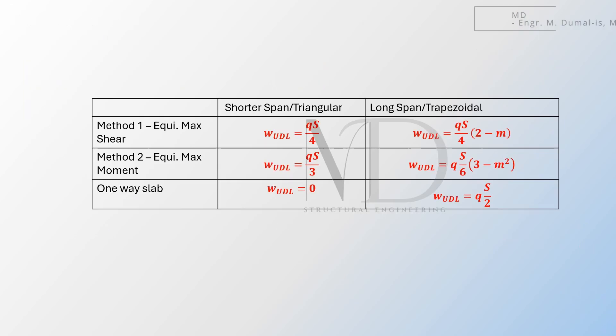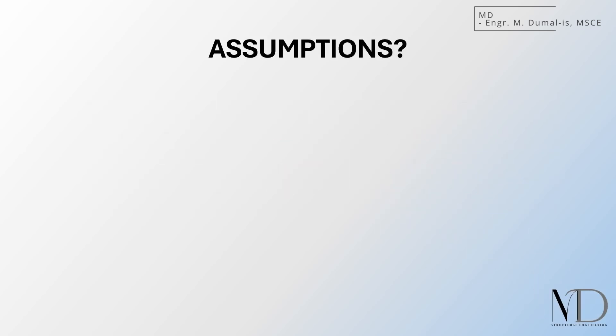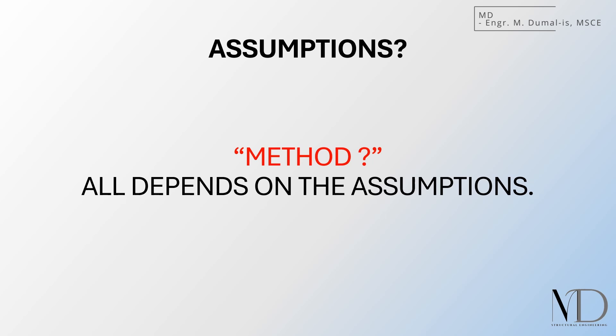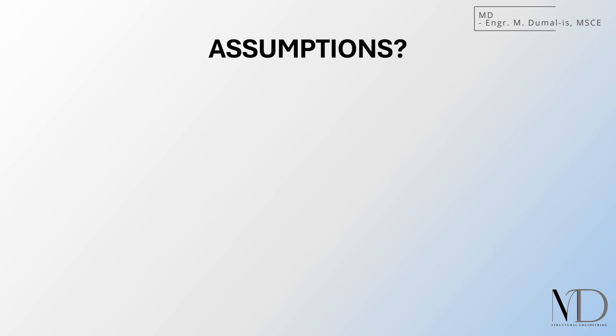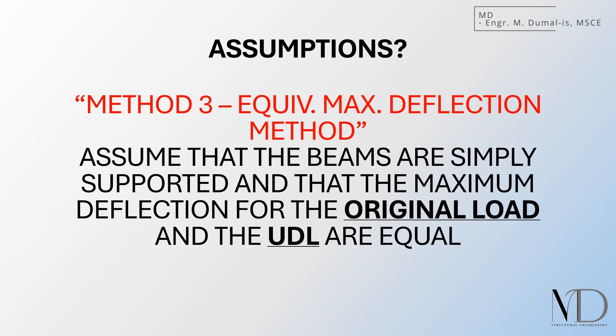The result of the derivation can then be summarized into a tabulation. Notice that in all the methods we used, we only focused on a specific structural response, whether it was shear or moment, and assumed that the result from the original load and the UDL were equal. This means we can actually expand our approach further by considering other response parameters, such as comparing deflections or even exploring alternative methods.